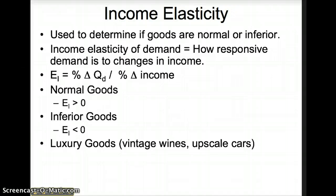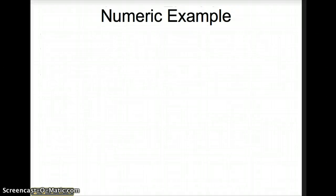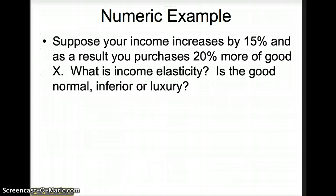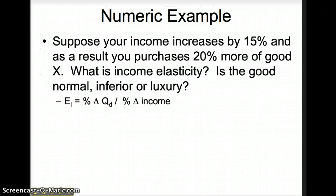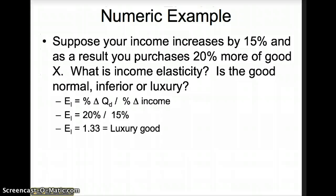Luxury goods like vintage wines and upscale cars will have a coefficient greater than 1. For example, suppose your income increased by 15% and as a result you purchased 20% more of good X. What is the income elasticity coefficient and is the good normal, inferior, or luxury? Income elasticity equals the percentage change in quantity demanded divided by the percentage change in income: 20% divided by 15% gives a coefficient of 1.33. Therefore, good X is a luxury good.